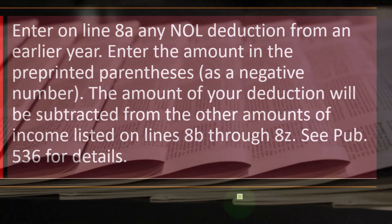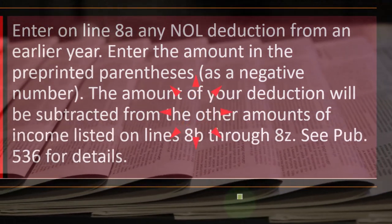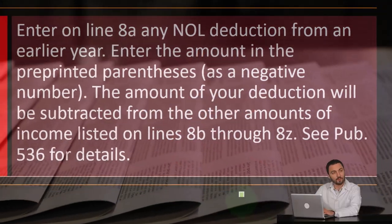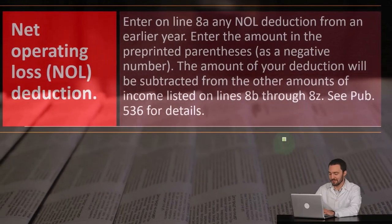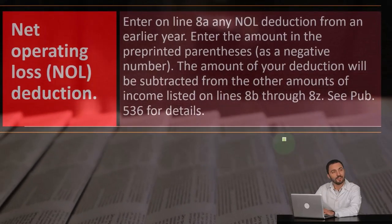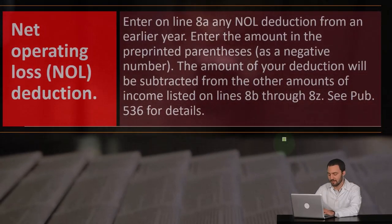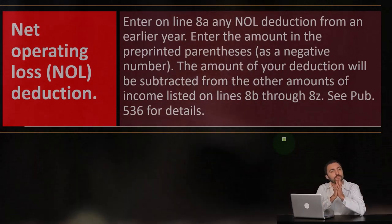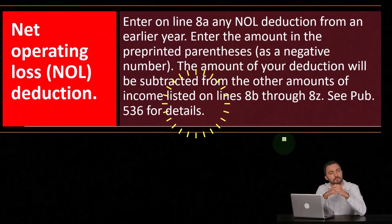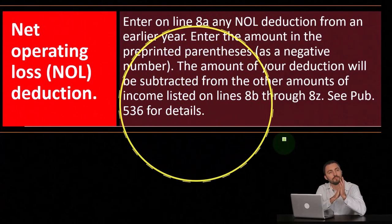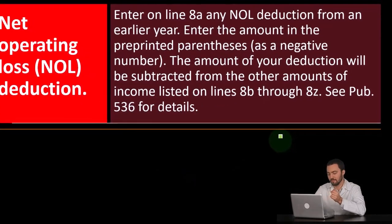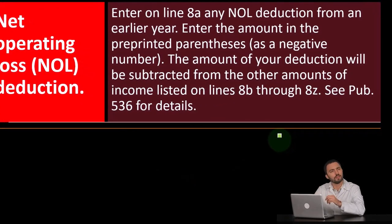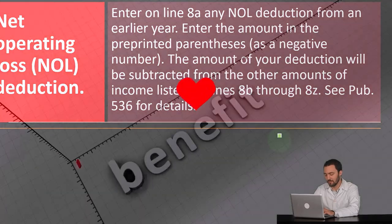If we have a net operating loss — we talked about losses a bit — meaning that like if you had a Schedule C, for example, and you had more expenses than income, that's quite common for startup type of businesses. The IRS is going to be quite skeptical of losses, because what does the IRS want? They want you to make income so they could take part of it. If you have a loss, they don't want to take on the risk of your business losses.